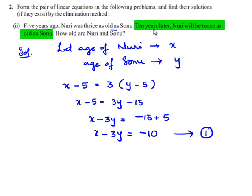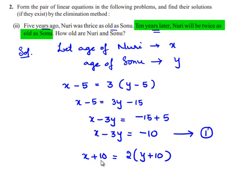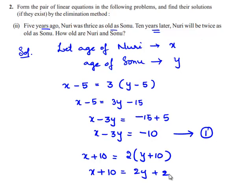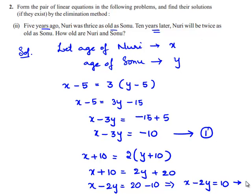Using the second condition: 10 years later, Nuri will be twice as old as Sonu, so x plus 10 is equal to 2 times of y plus 10. This equation can be rewritten as x plus 10 is equal to 2y plus 20, and x minus 2y is equal to 10. Name this as equation number 2.